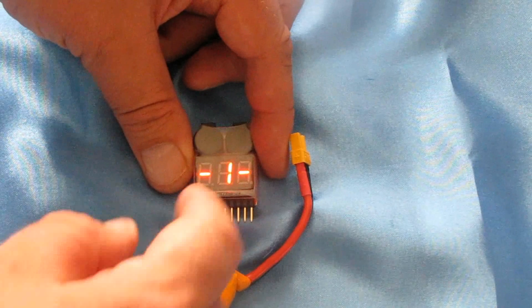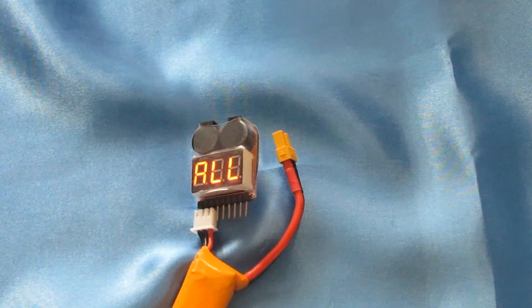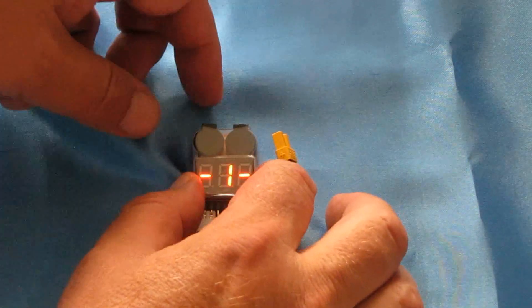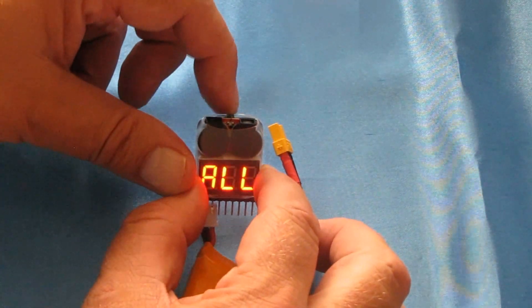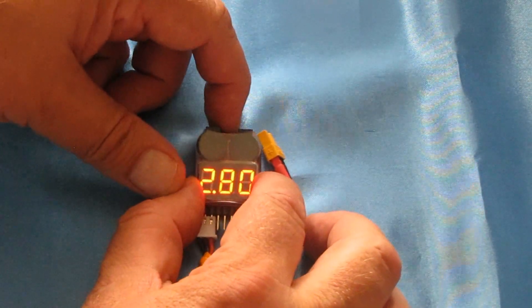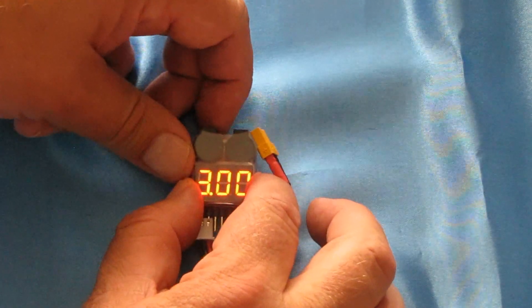There's one other thing that this voltage tester has, the capability to tell you and warn you if it's a low voltage battery. You can set that. There's a little button right up here, a little pin button that you press repeatedly. Right now it's set to 2.8 voltage warning. Let's take it up to 3.3.